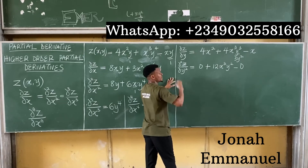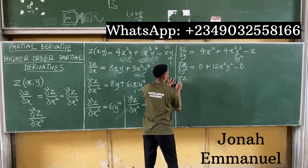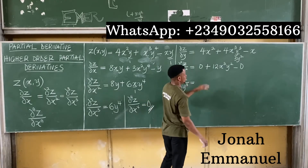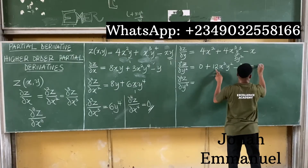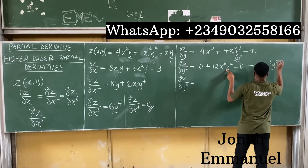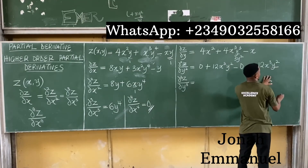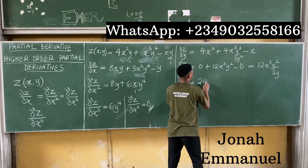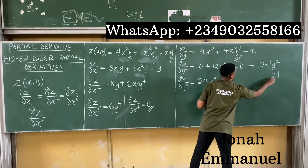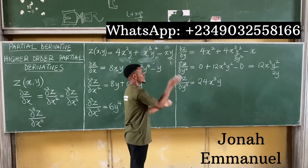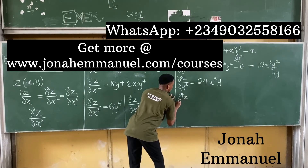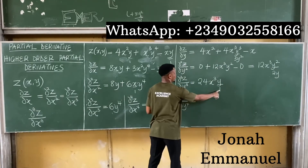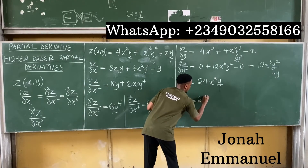Differentiating again with respect to y, for partial cubed z all over partial y cubed: differentiating y squared in 12x cubed y squared gives 2y; 12 times 2 is 24, giving 24x cubed y. So partial cubed z over partial y cubed equals 24x cubed y. For the fourth derivative, partial to the power 4 z all over partial y to the power 4: differentiating y gives 1; 1 times 24x cubed gives 24x cubed. So the fourth partial derivative with respect to y equals 24x cubed.